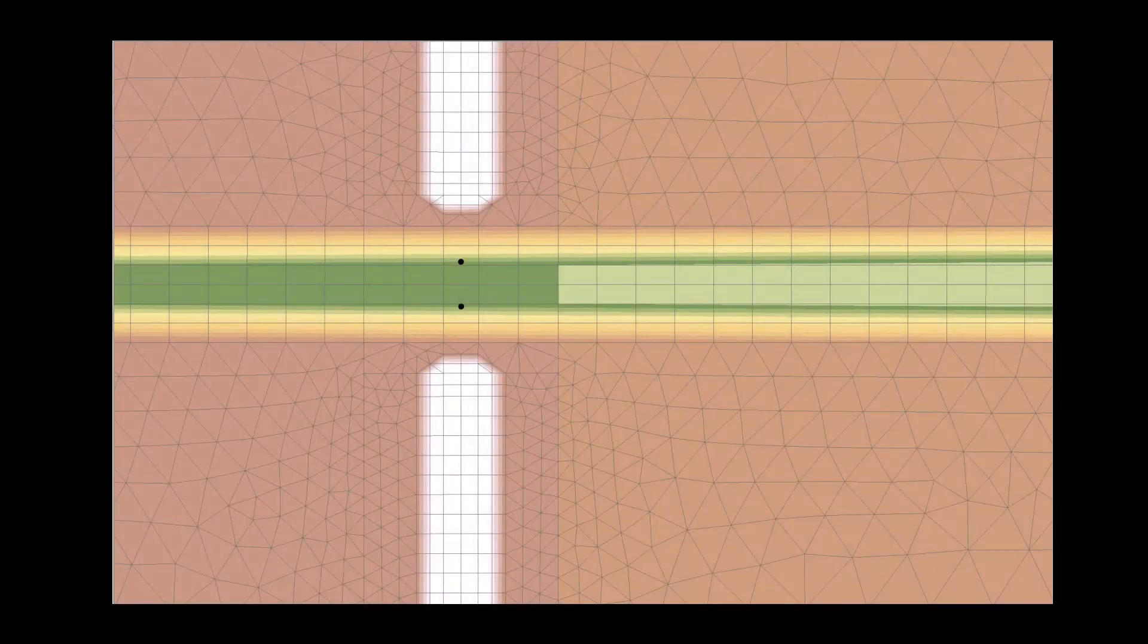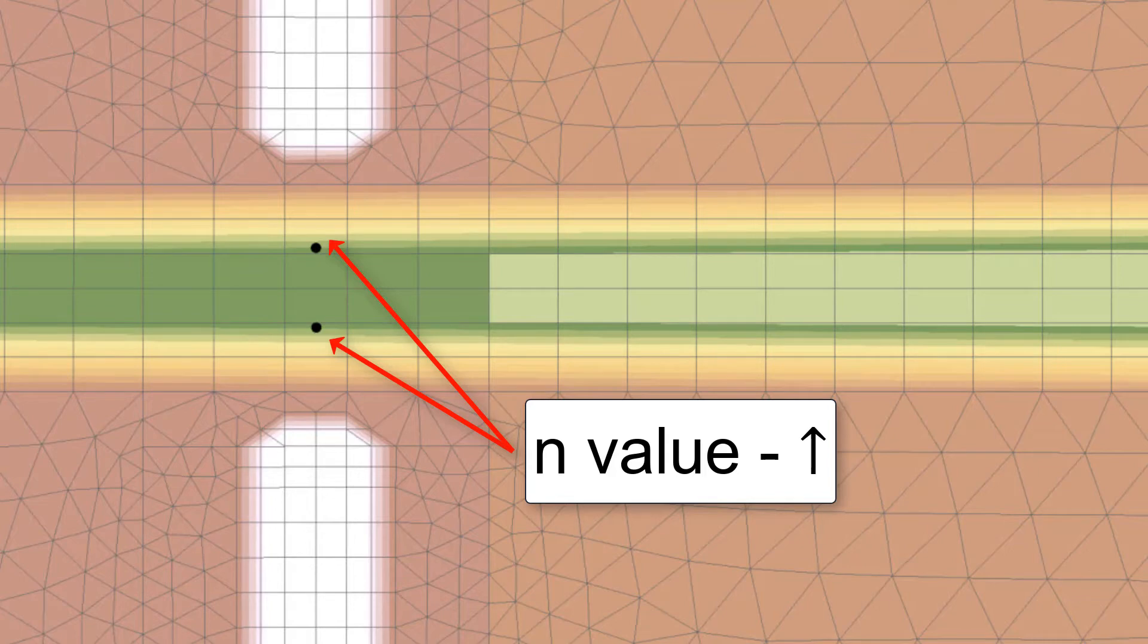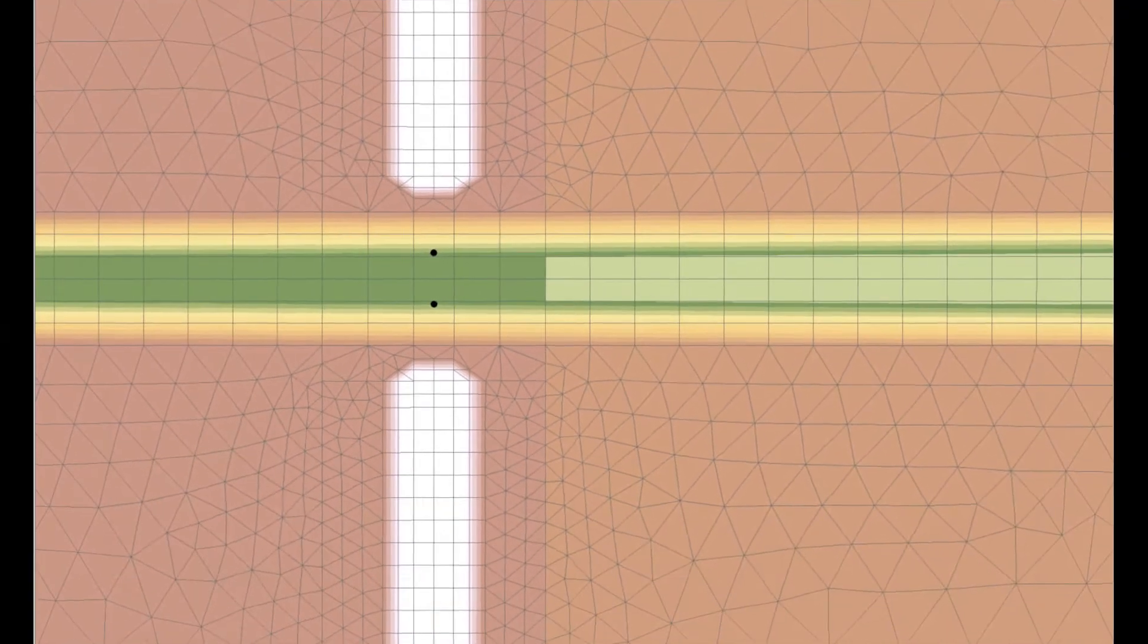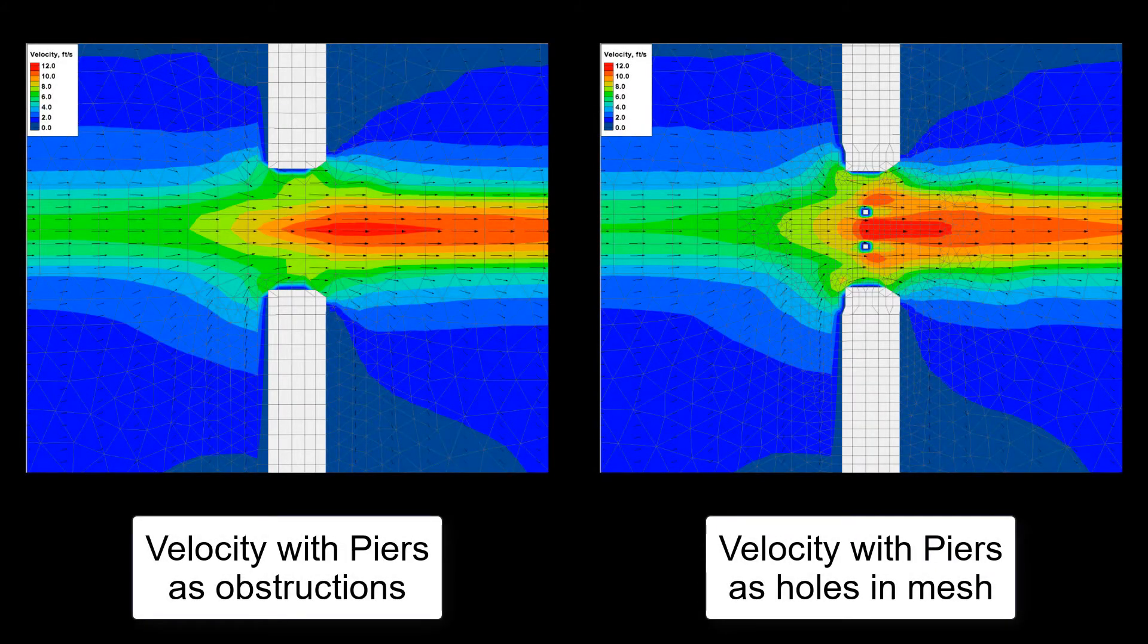When representing piers with obstructions, SRH increases the material roughness value to account for pier drag force within an element. This method can accurately represent upstream backwater effects caused by piers, but does not provide accurate velocities and flow patterns in the vicinity of the pier.